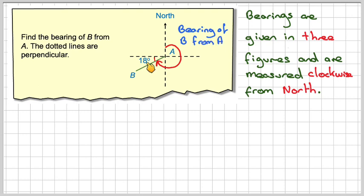And then we can use the properties of these perpendicular lines to find it. We know all the way round to here will be 270 degrees. So we'll do 270 minus the 18 degrees, and that will give me the required bearing: 252.